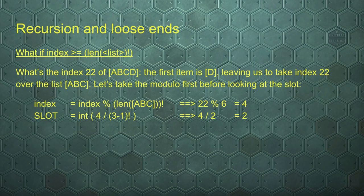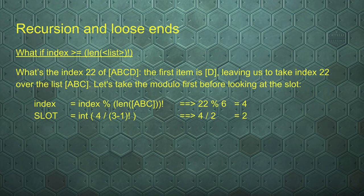First point of order: what if the index is greater than or equal to the factorial that we get? So on our list of A, B, C, D we get index 22, which falls in the range of the 24 possibilities — it's in the range of 0 through 23, so there's no problem there. We determine that the first element in our permutation should be D. Then we use this function again recursively, so we get the list A, B, C and we want to know index 22 — but there are only 6 possibilities. We can simply take 22 modulo 6, and whatever remains is the index we want to use for this smaller subselection.